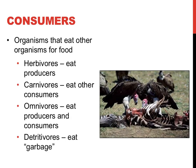Instead of producing their own food, some organisms called heterotrophs, or consumers, opt to eat other organisms to obtain their energy. There are many different classifications of consumers: herbivores eat producers, carnivores eat other consumers, omnivores eat both consumers and producers, and detritivores eat things that are already dead or dying. You may also know them as scavengers. Decomposers are a type of detritivore that break things down on a chemical level.